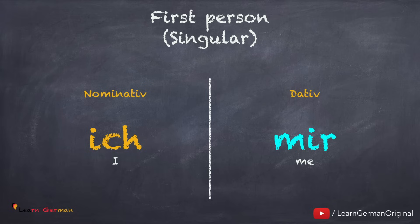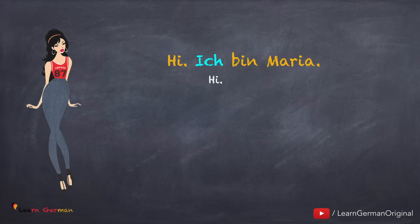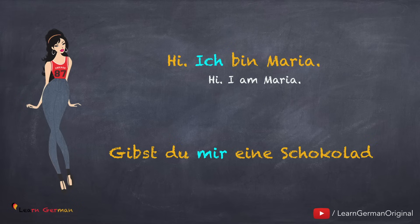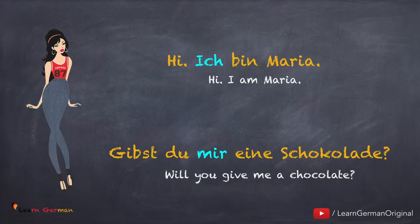Hence we use ihm in this sentence. Let's learn the various dative personal pronouns. First person singular: in Nominativ it is ich, and the dative equivalent is mir. Let's see how to use this in a sentence: 'Hi, ich bin Maria. Gibst du mir eine Schokolade?' In this sentence, du is Nominativ, eine Schokolade is accusative, and mir is the dative object. The personal pronoun in dative for ich is mir.